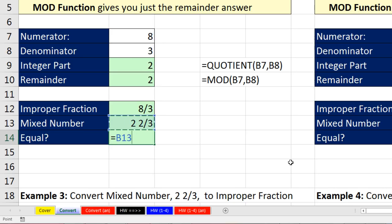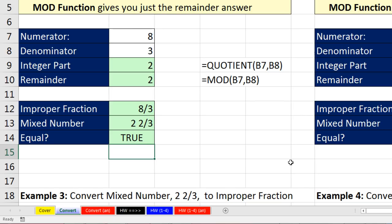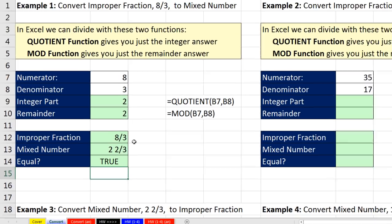Now I'm going to check to make sure they're equal — equal sign, up arrow, equal sign as a comparative operator, up arrow, up arrow. When I hit Enter, it tells me yes, indeed, they are both equal. Those formulas don't look at the number formatting — they look underneath at the underlying numbers.